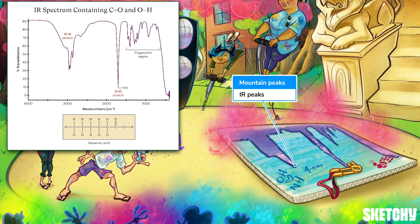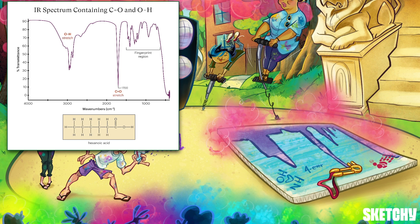Before we dive into the specifics, the y-axis on an IR spectrum measures percent transmittance — this lets you know how much of each frequency of light traveled through the compound being analyzed. Low transmittance means lots of that type of light was absorbed, which is why the peaks signaling absorption are counterintuitively lower rather than higher. The x-axis is measured in units called wave numbers, which are directly proportional to frequency.